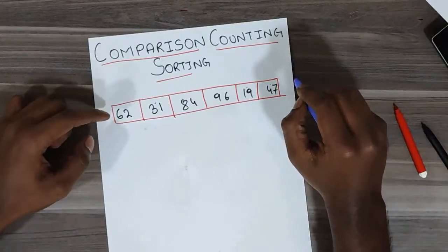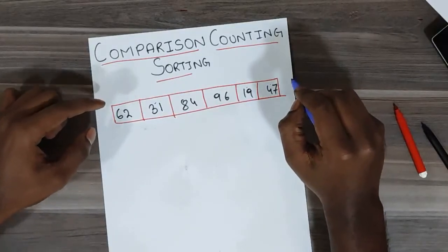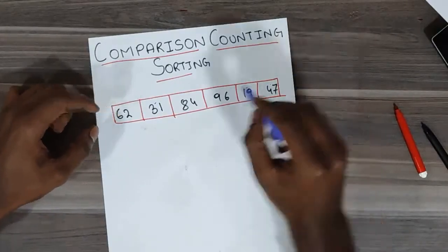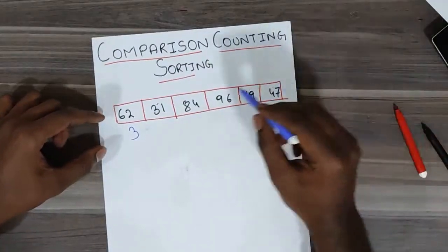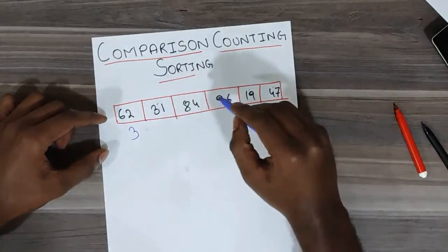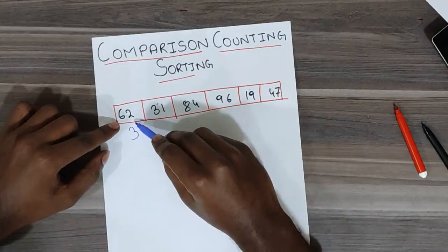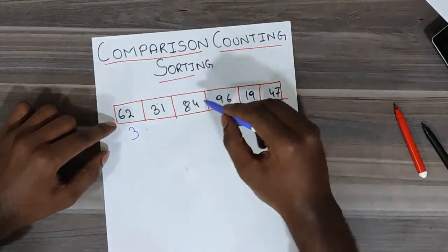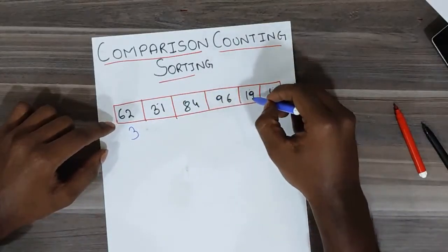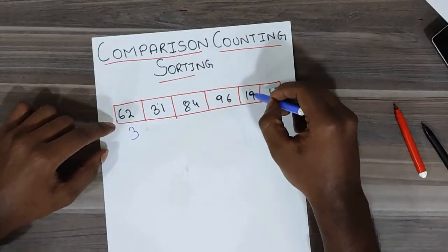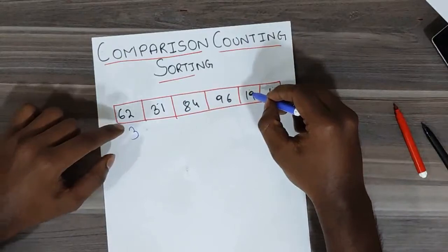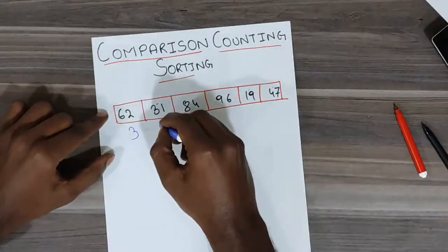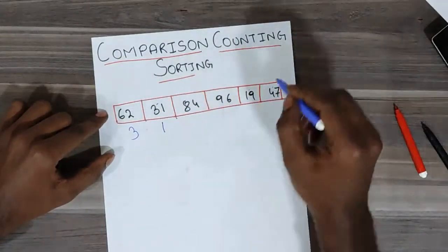So the number corresponding to 62 would be 3. Similarly, let's do for 31. Is 62 less than 31? No. Is 84 less than 31? No. Is 96 less than 31? No. Is 19 less than 31? Yes. Only 19 is smaller than 31, so 31 would have a count of 1.